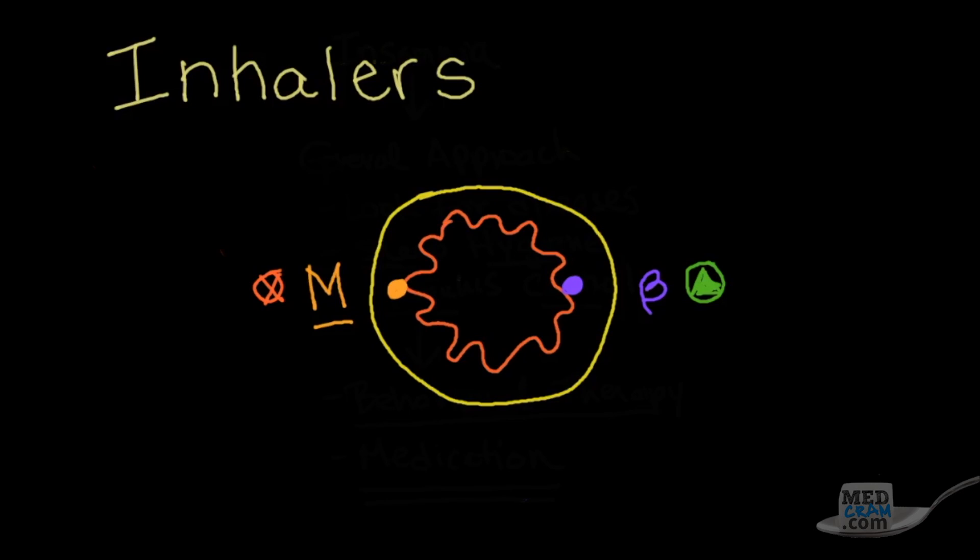Now the only other one that you should know is the inhaled corticosteroid, which we'll say here is an ICS, and that basically goes everywhere. There is no real receptor, but what it does is it reduces inflammation. So the three types of drugs that you can use for bronchi are muscarinic antagonists, beta agonists, and inhaled corticosteroids.